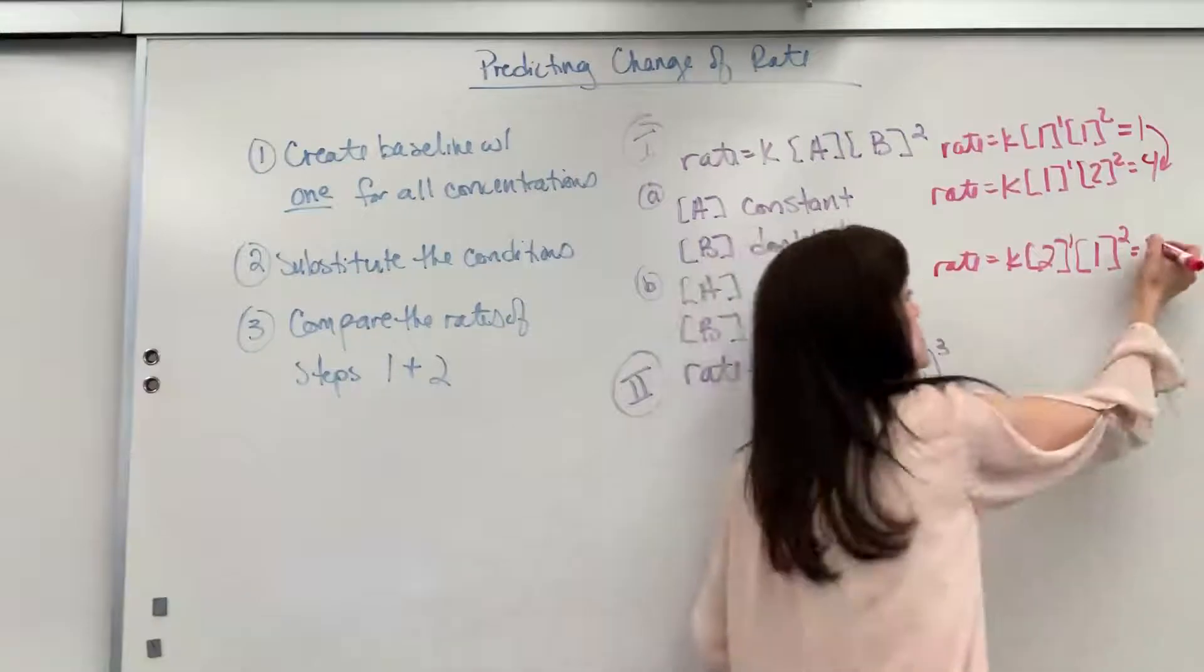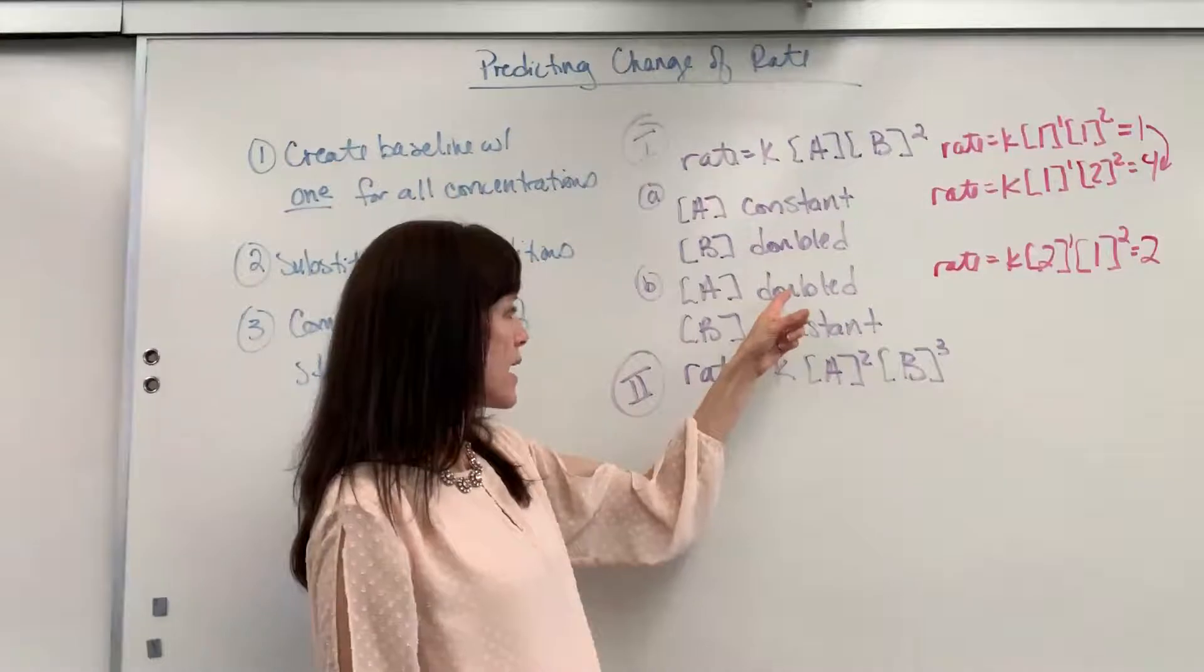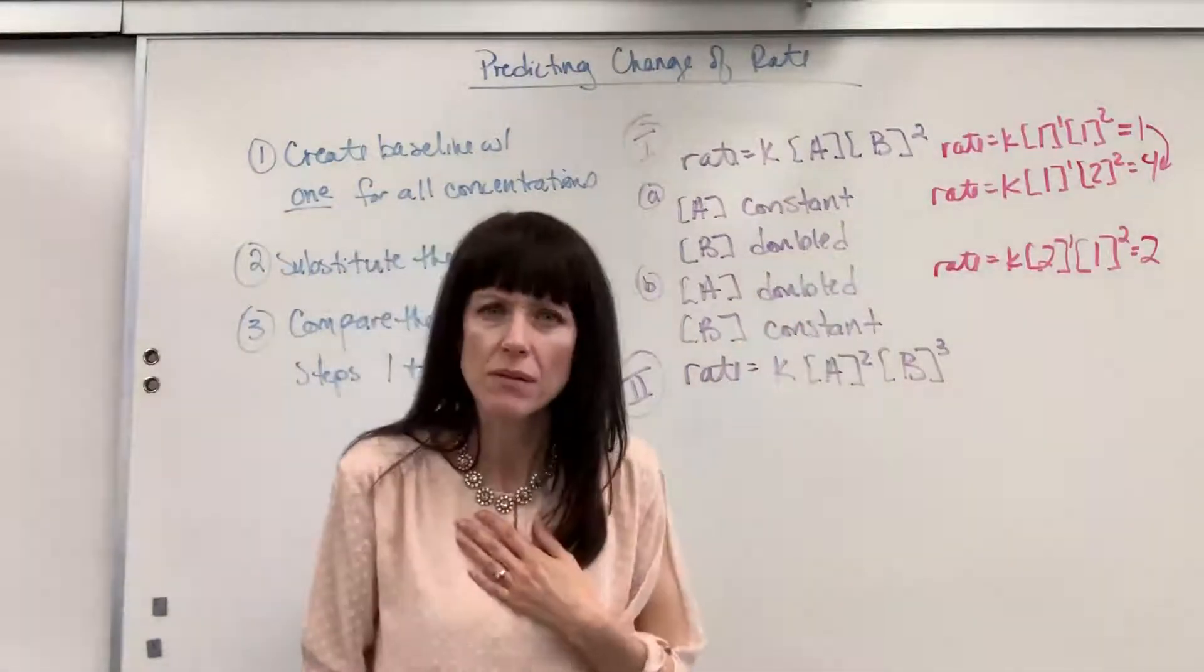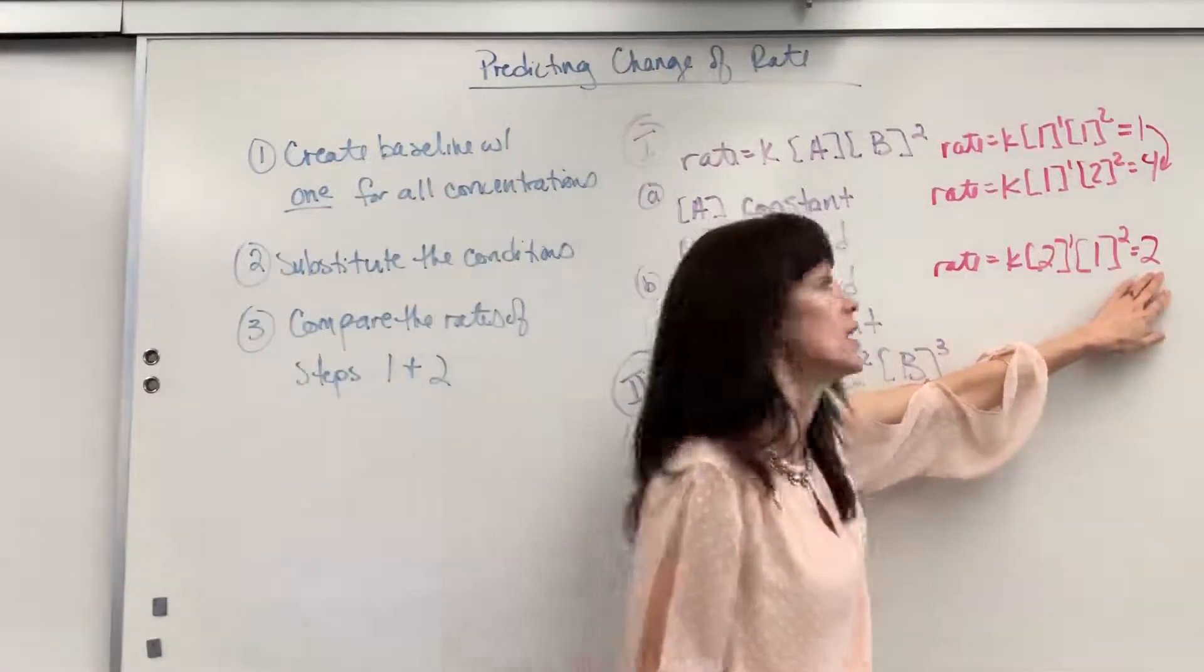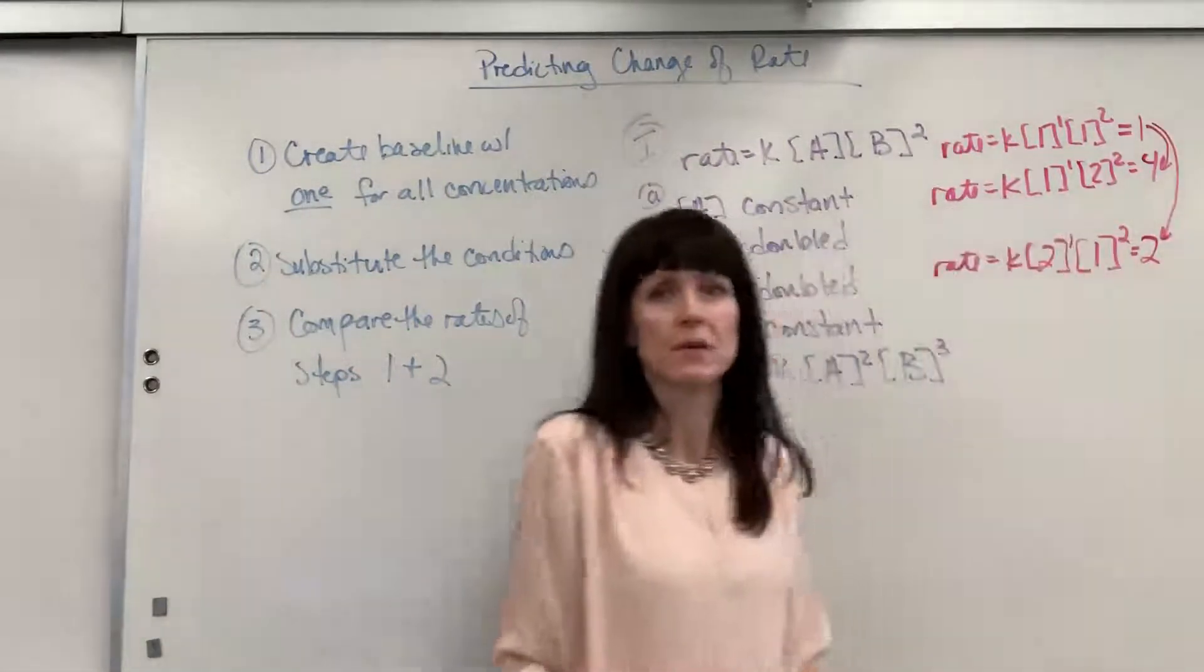So in this second situation, if we double A and B is held constant, what happens to the rate? It's going to double. It will go twice as fast. So in this situation, the rate will double.